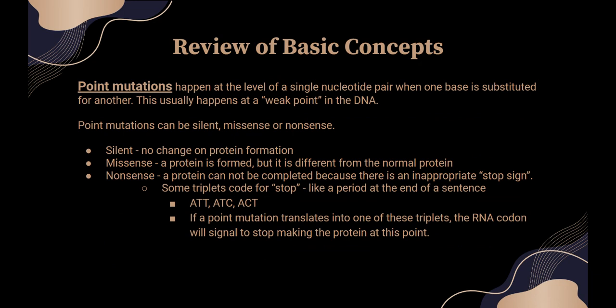Point mutations happen at the level of a single nucleotide pair when one base is substituted for another. That usually happens at a weak point in the DNA. I did not write everything on the slide that I'm going to say, but I do want you to understand how this happens.